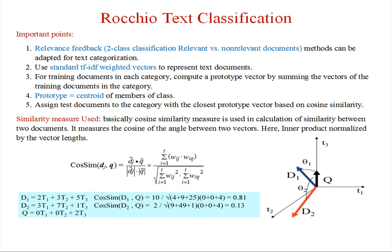Now, the Rocchio text classification — how it works. The key concept is relevance feedback for two classes: relevant versus non-relevant documents. Rocchio uses TF-IDF weighted vectors to represent text documents. For training, in each category it computes a prototype vector by summing the vectors of training documents in that category, calculates the centroid, and assigns new documents to the category with the closest prototype vector based on cosine similarity.